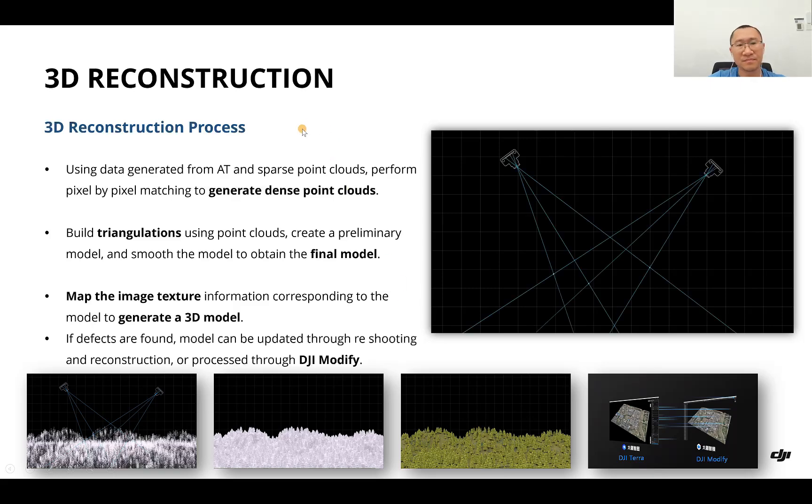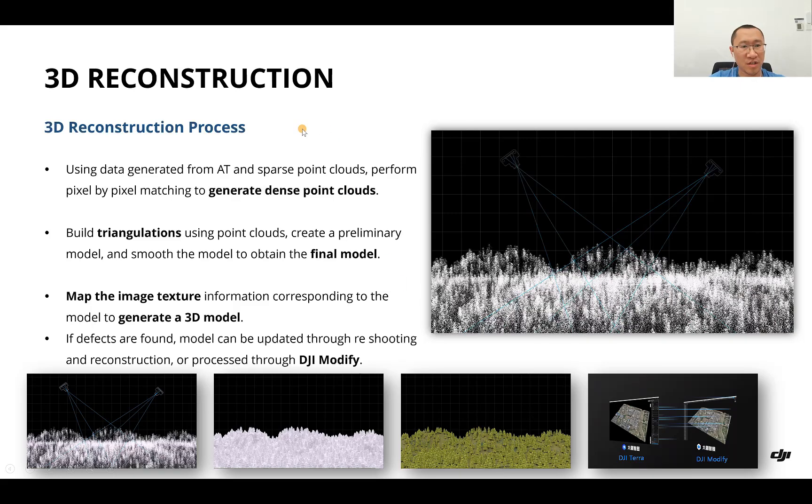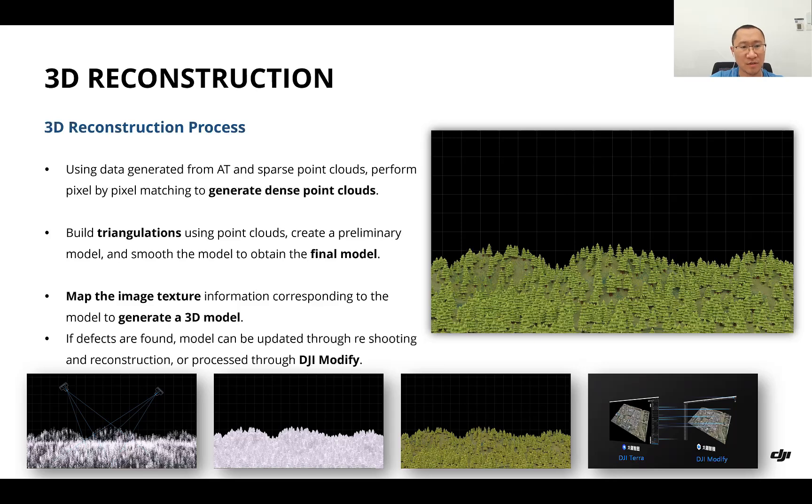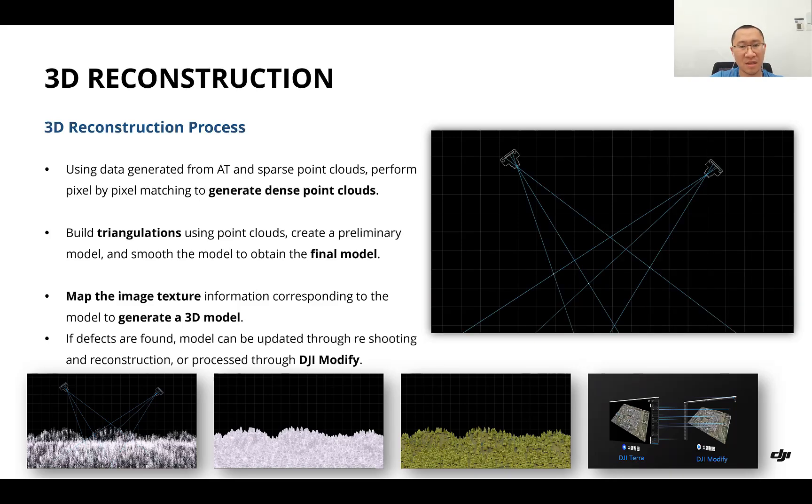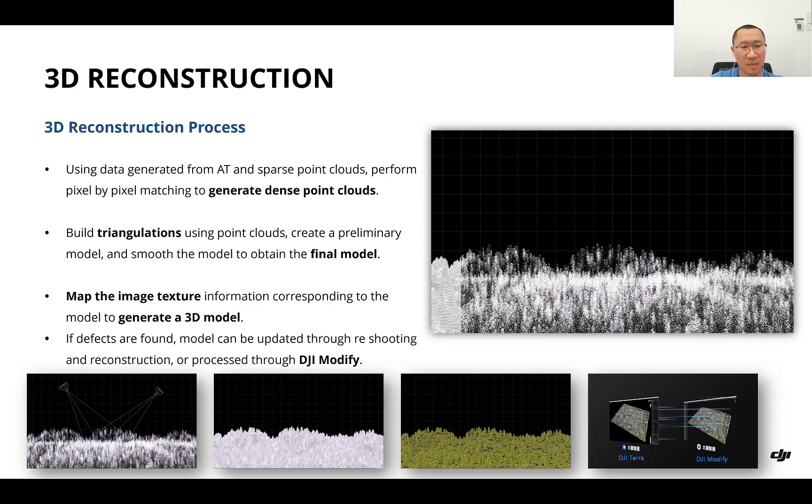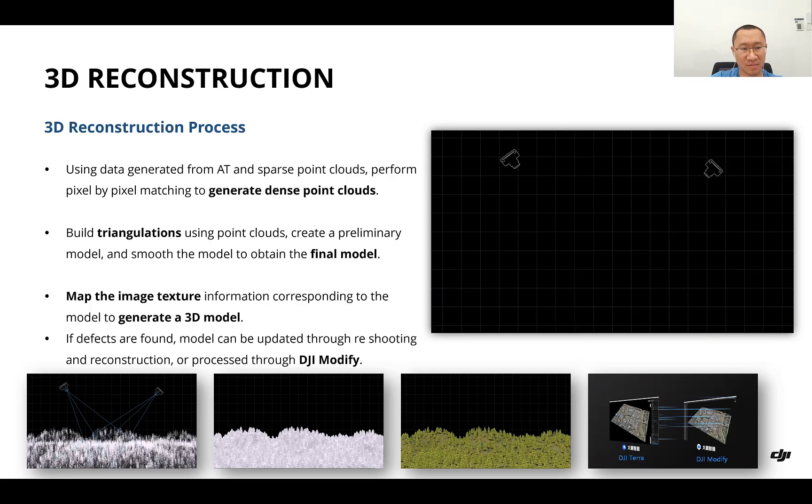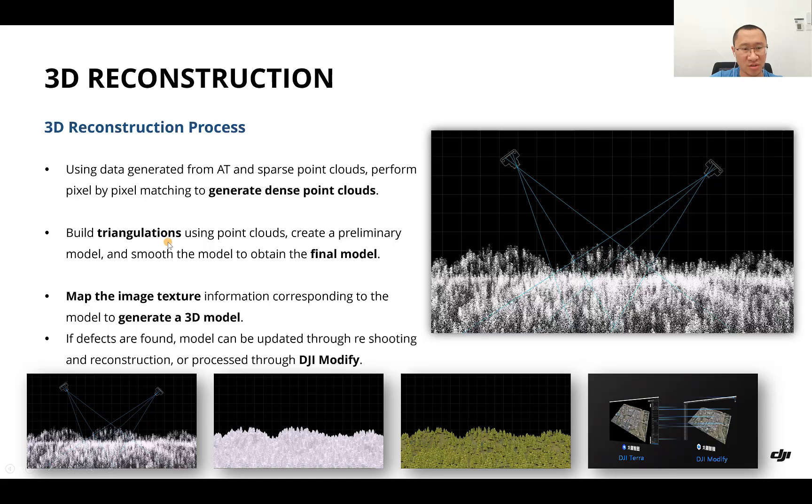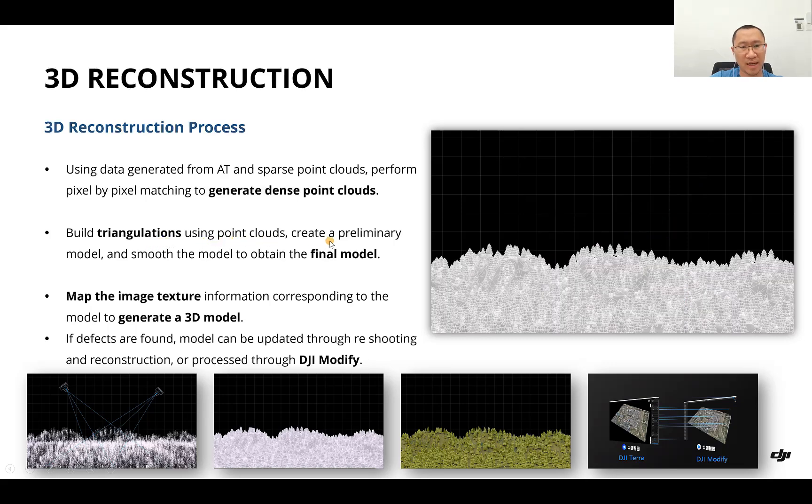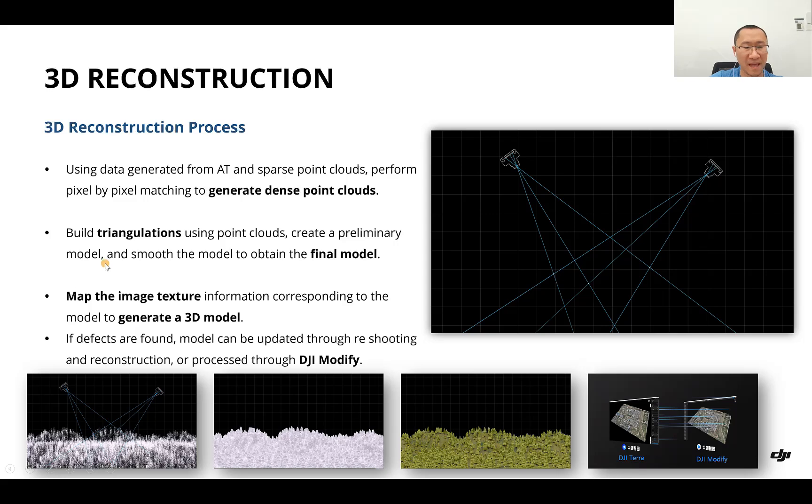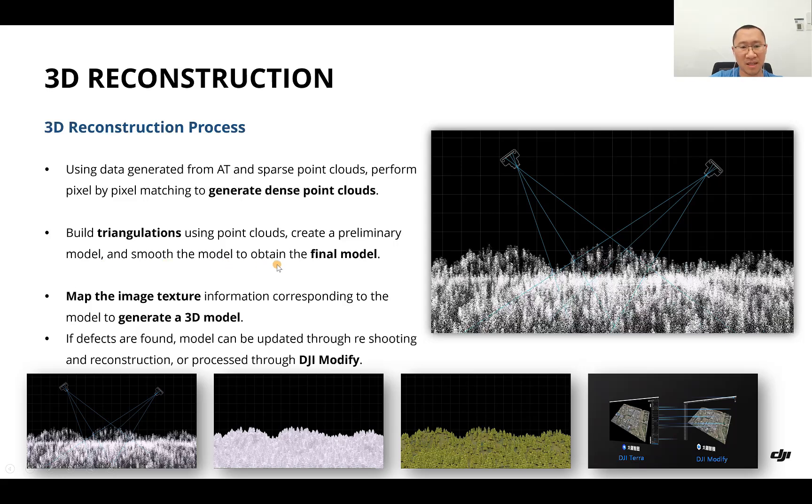As for the 3D reconstruction process, first we use data generated from aerial triangulation and sparse point clouds. We perform pixel-by-pixel matching to generate dense point clouds. Then we build triangulations using the point clouds, creating a preliminary model and smoothing the model to obtain the final model.